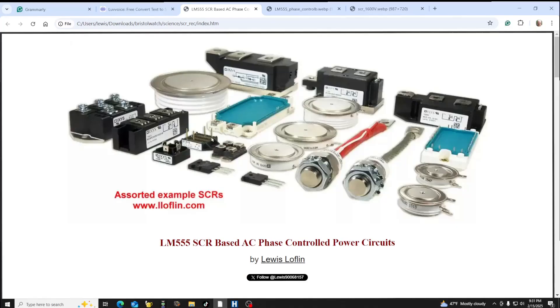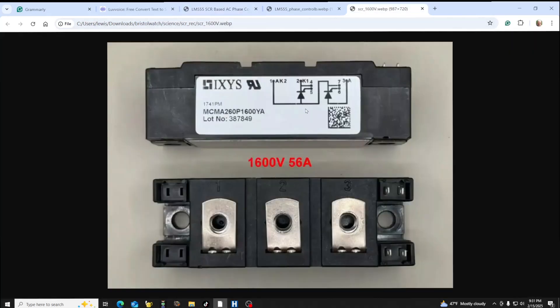This of course shows some examples of all types of SCRs. They can handle hundreds of amps and well over a thousand volts. Let's take this one for instance - it has the internal equivalent of two SCRs. It will handle 1600 volts at 56 amps. So this of course is going to act as a heat sink. Here's your connections over here. These would be the gate cathode connections for each individual SCRs that's connected from cathode to anode and so forth.